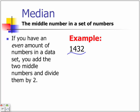When you put them in order, that's 1, 2, 3, 4. And you add these 2 middle numbers, and that's 5. And then you divide 5 by 2. And 5 divided by 2 equals 2.5.